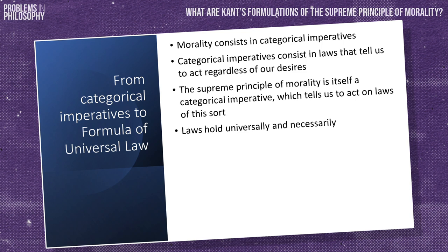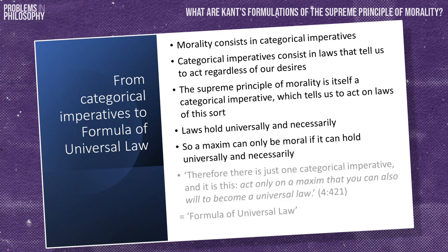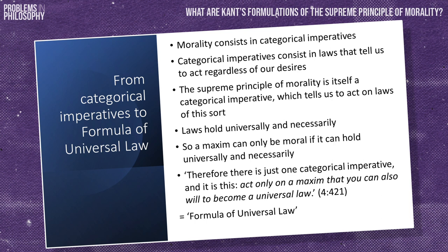It is therefore the case that the supreme principle of morality is itself a categorical imperative that instructs us to act on laws of this sort, and so tells us that we must act on maxims or principles of action that are fit to be such laws. But as Kant argued in section 1, laws hold universally and necessarily, so a maxim can only be moral if it can hold universally and necessarily. In this way we arrive at a result that parallels the outcome of our inquiries in section 1. Therefore, there is just one categorical imperative and it is this: act only on a maxim that you can also will to become a universal law. This formulation is usually known as the formula of universal law, but Kant goes on to offer several others, which we will now discuss.